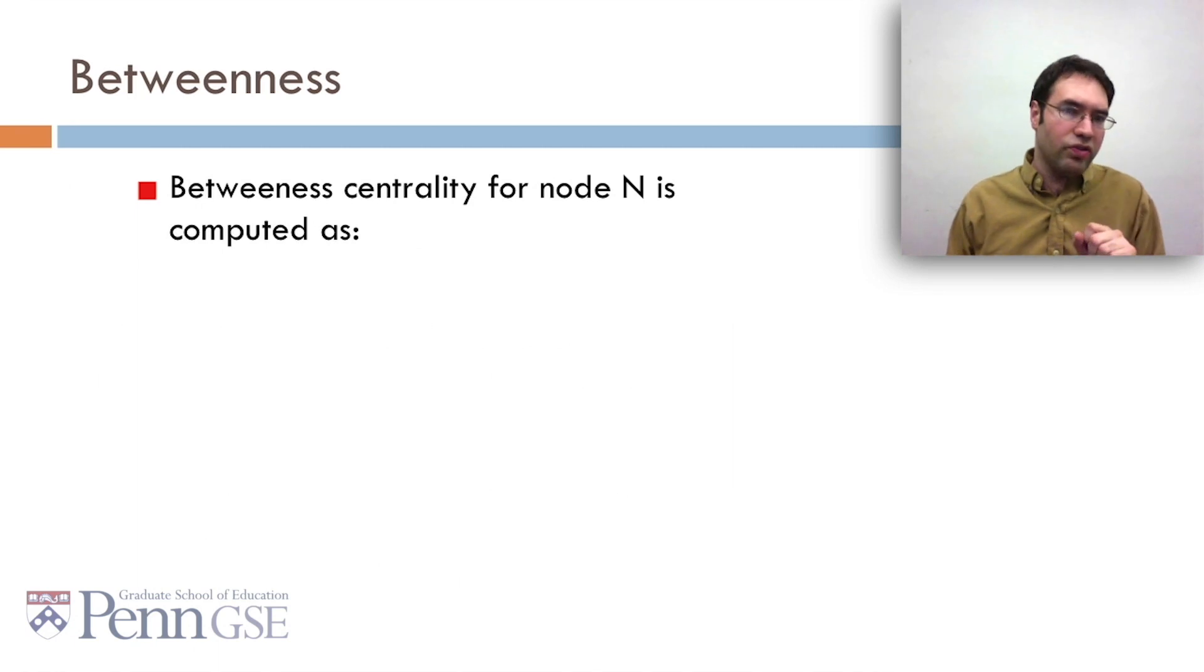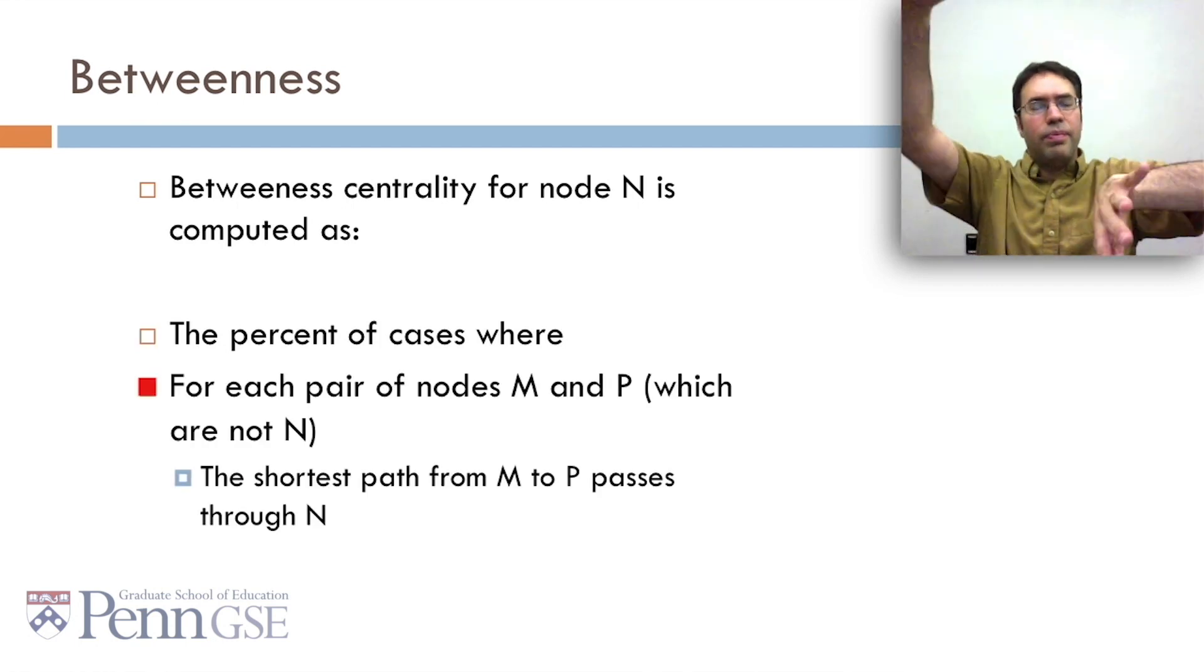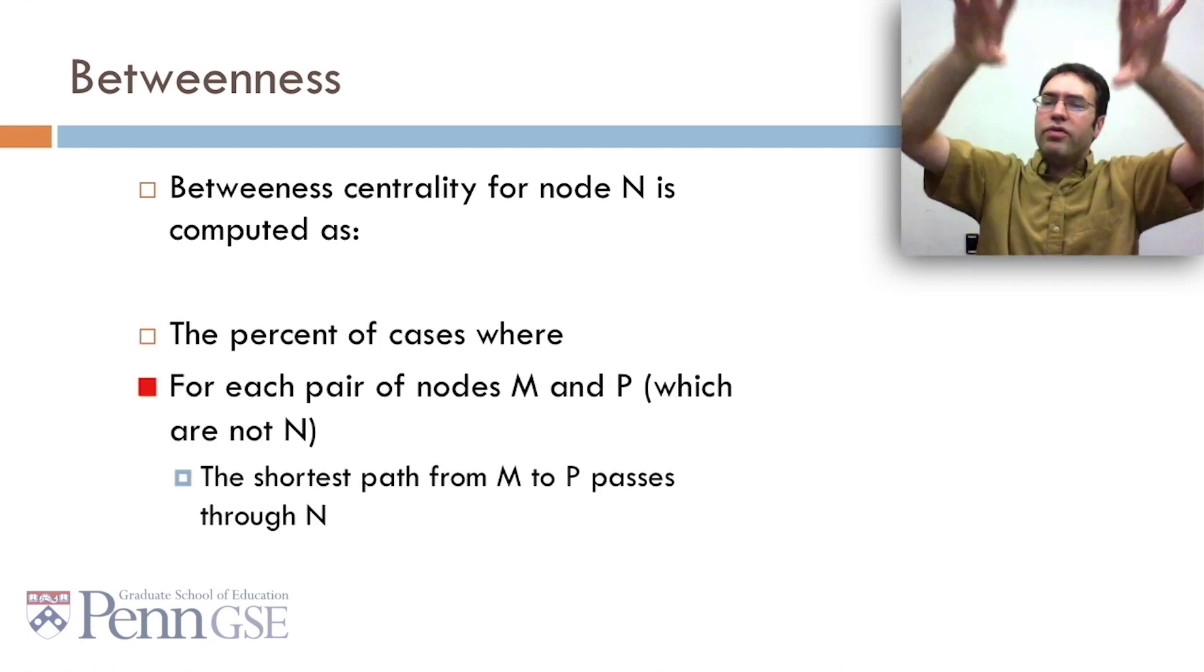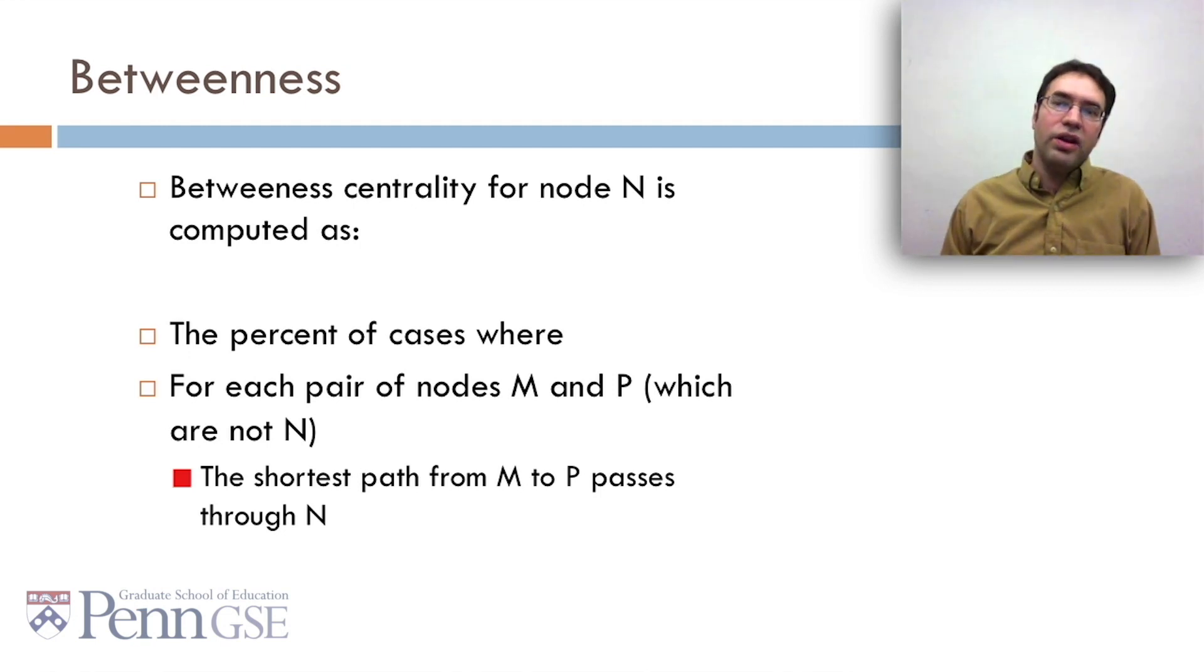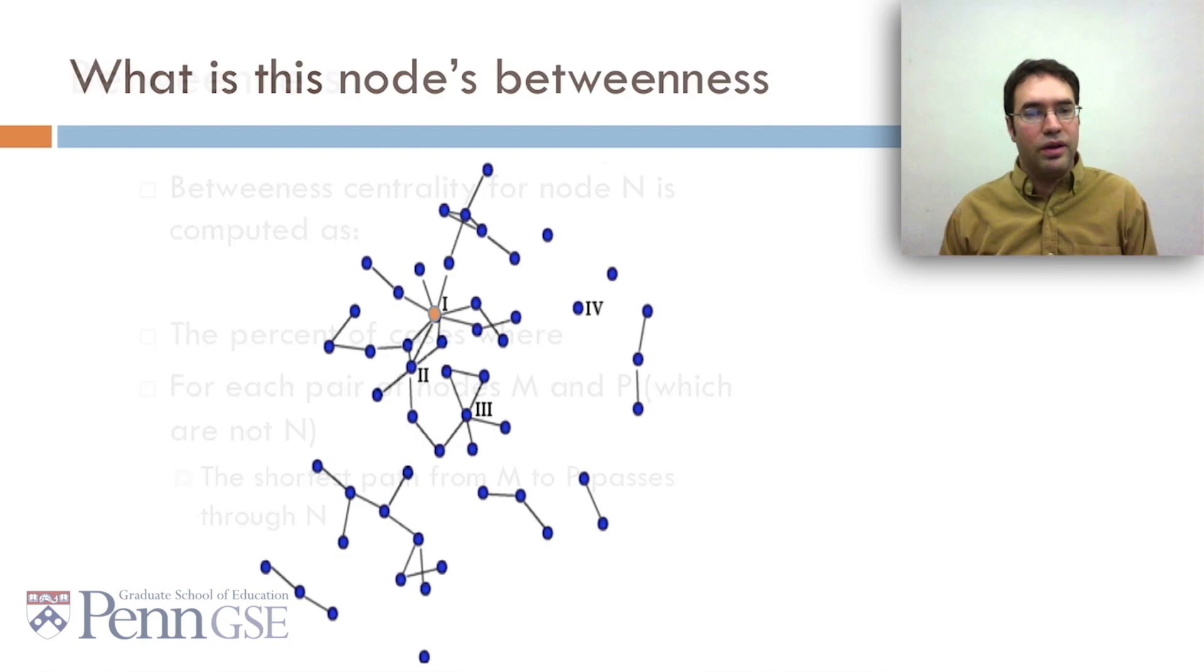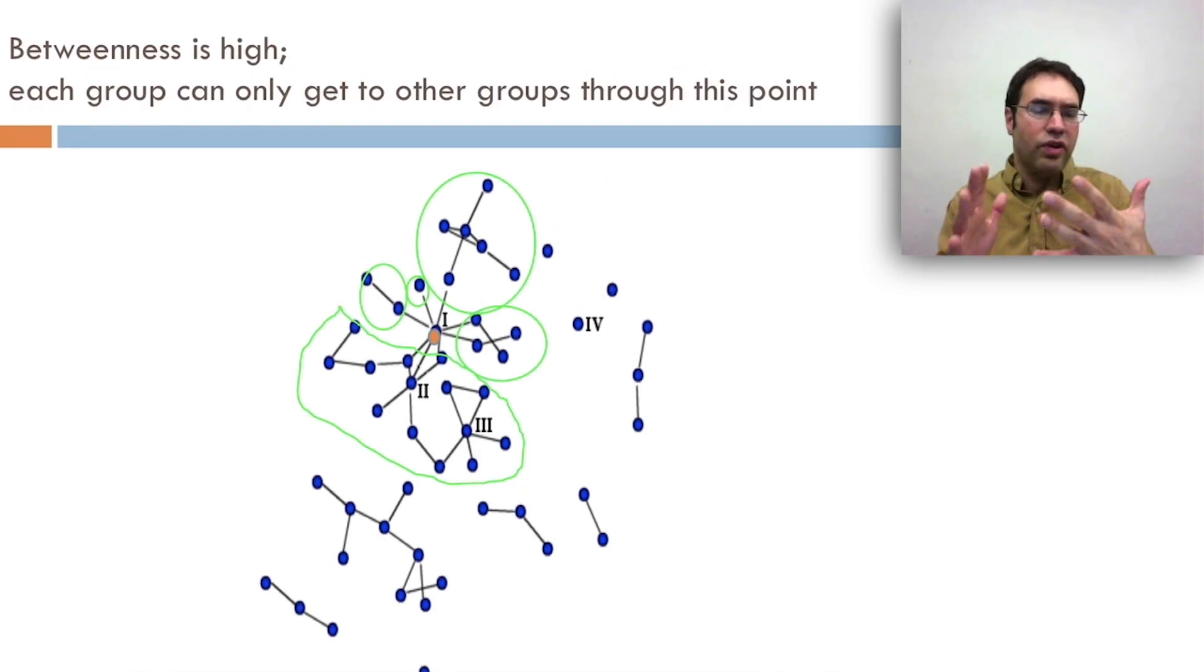A third type of centrality is betweenness centrality. The betweenness centrality for a node, n, is computed as the percent of cases where, for each pair of nodes, m and p, for any other pair of nodes, does the shortest path from m to p pass through n. The percent of cases where the best way to get from m to p goes through n is the betweenness centrality of n. So, for example, what's this node's betweenness? For this graph, the betweenness is high because each group can only get to other groups for this point. There's actually five groups that each independently can only get to the other groups through going through i. So it's going to have pretty high betweenness.